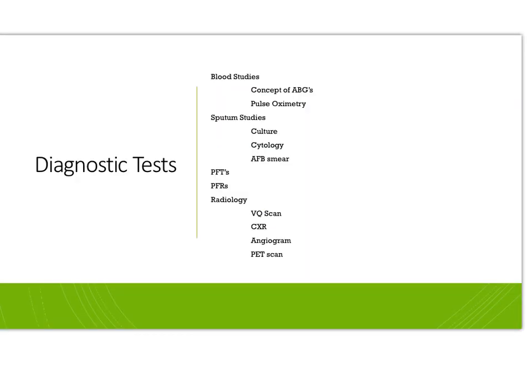For diagnostic studies in oxygenation, blood studies include ABGs — there is a separate Explain Everything for you to review and you need to learn your normal values. Pulse oximetry is non-invasive and painless, measures O2 saturation, and a reading of 95% or greater is considered normal. When someone has an oxygenation issue, compare their current O2 sat to their baseline. O2 sat readings can vary with nail polish, patient movement, poor perfusion, or carbon monoxide poisoning.